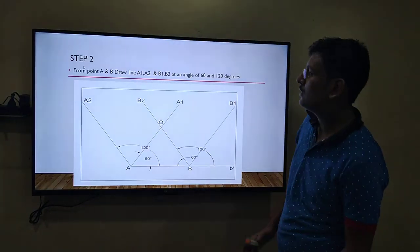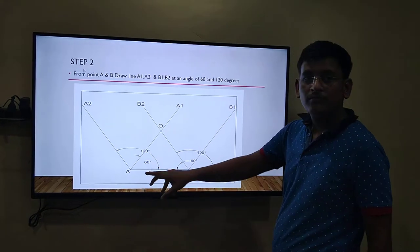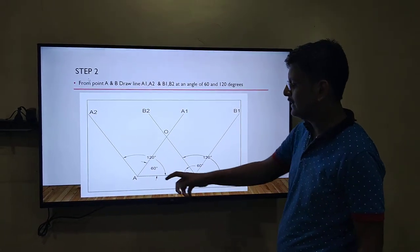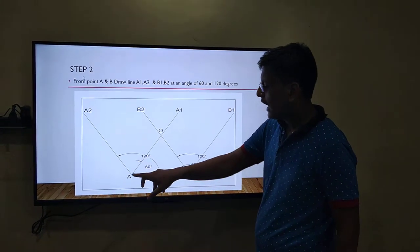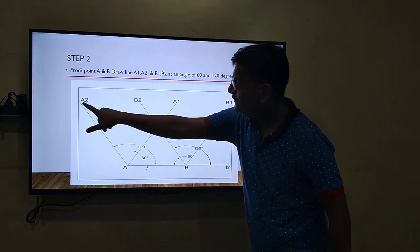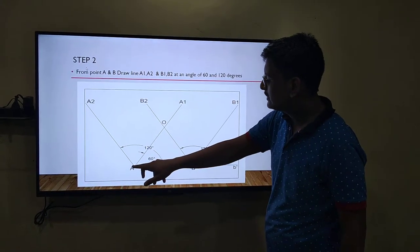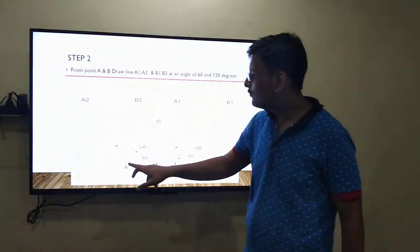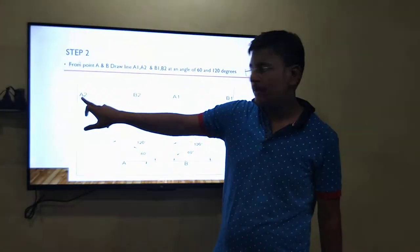Next slide. From point A and from point B, keep the protractor and mark 60 degree and 120 degree. On the 60 degree line, give the name as A1 and on the 120 degree line, give the name as A2.